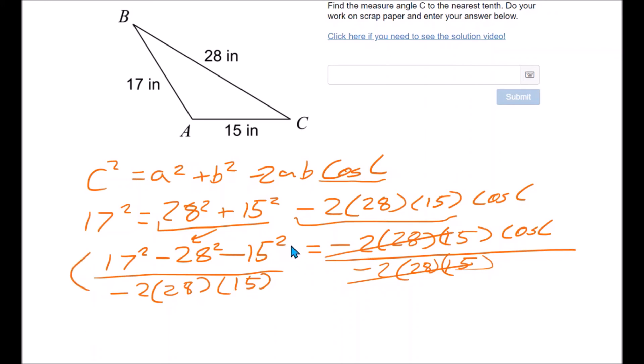2 times 28 times 15. Now this is, of course, this is what cosine of C is. So really, I want the inverse cosine. I'm going to write that down. And I'm going to enter this into my calculator all in one shot. 17 squared minus 28 squared minus 15 squared over negative 2 times 28 times 15. I'm going to enter this right in the calculator in one shot.